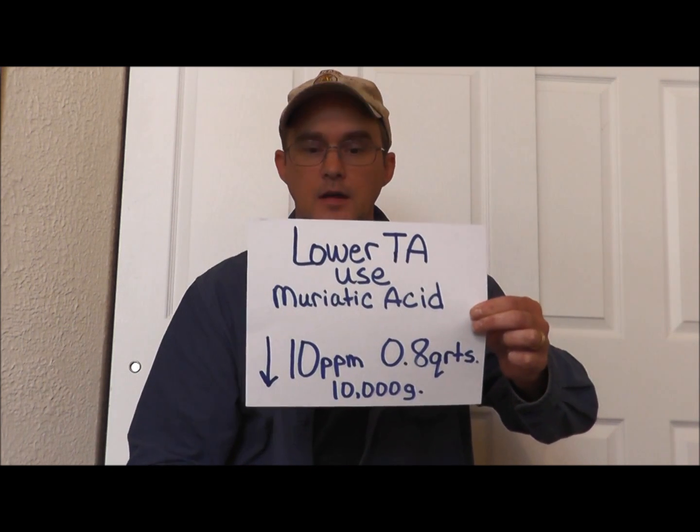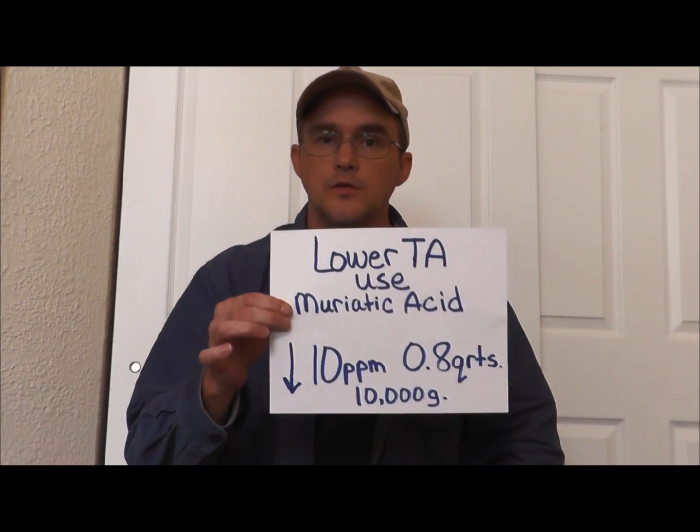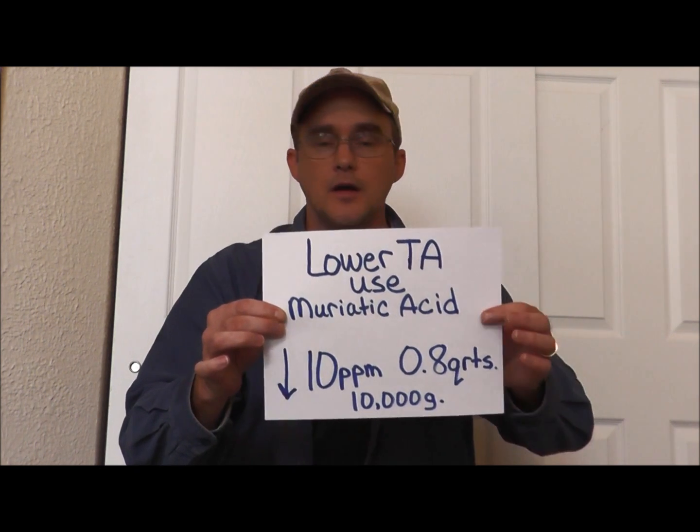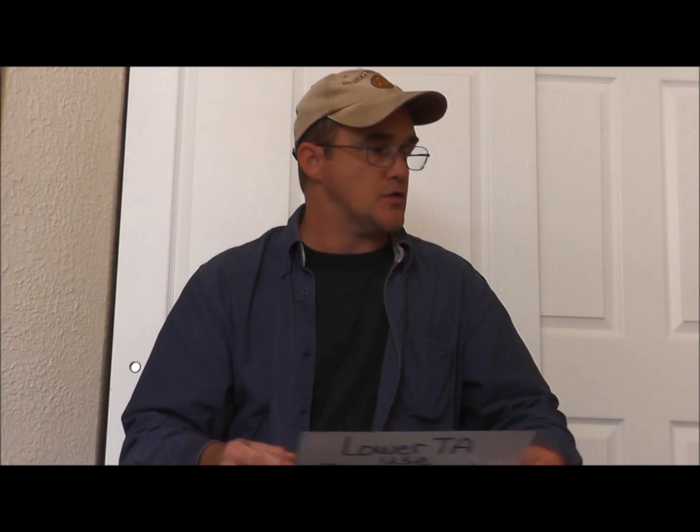That baseline is your best friend for lowering total alkalinity using muriatic acid. Go ahead and write it down or memorize it, and feel free to come back to this video anytime. Keep your alkalinity between 80 to 100 parts per million and you'll be good. Find the link below to my website, cleanpoolandspa.com — it's been up since 2008. I'm Robert with Clean Pool and Spa — happy and safe swimming. Thanks, bye.